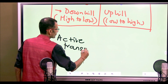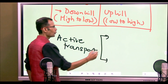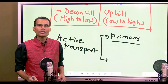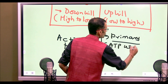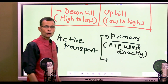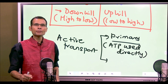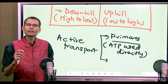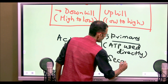Active transport will be called primary active transport when ATPs are consumed directly — ATP is used directly. The transport protein, the transporter, will bind the ATP, break it down, and right then and there energize the transport of those molecules. The most common example is the sodium-potassium pump.